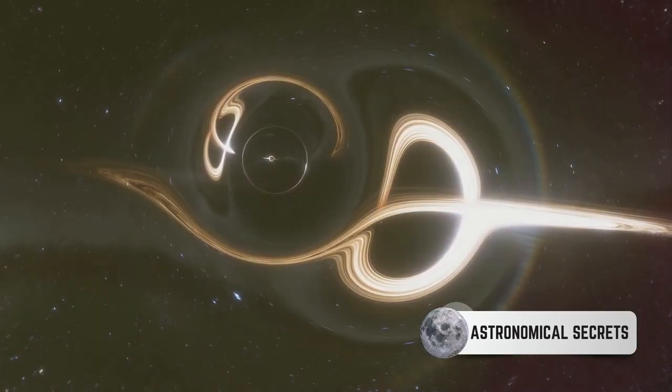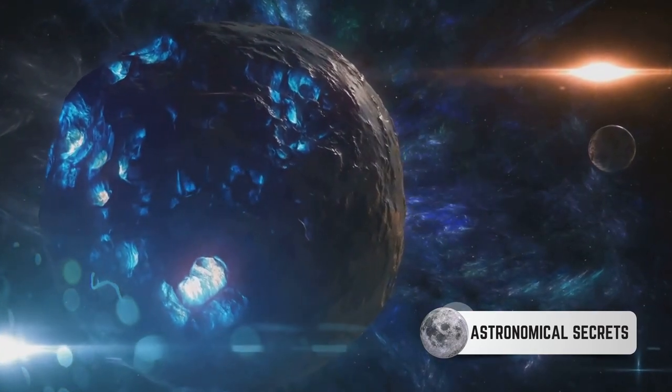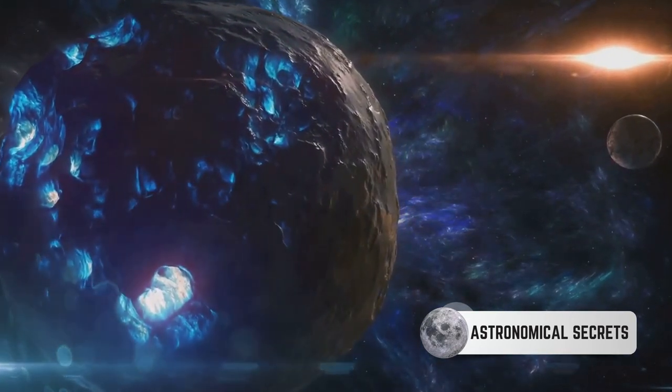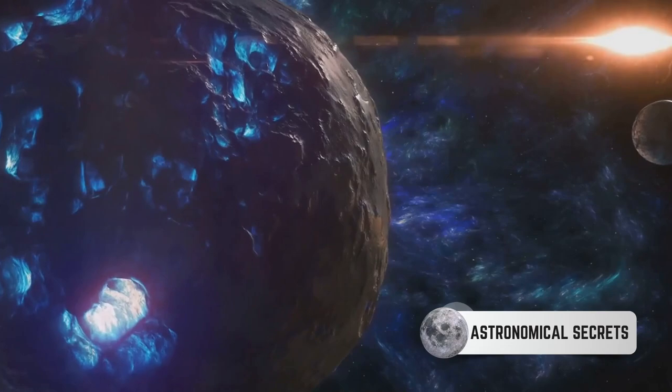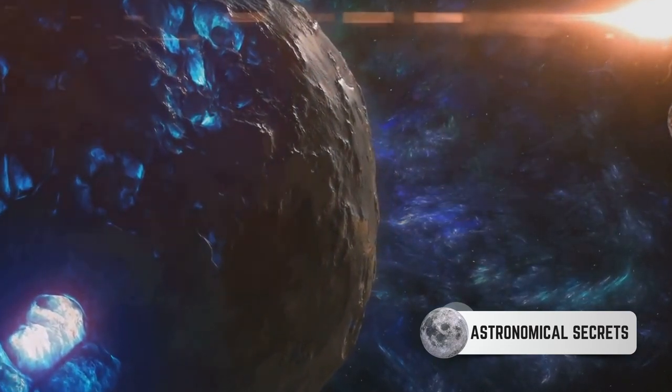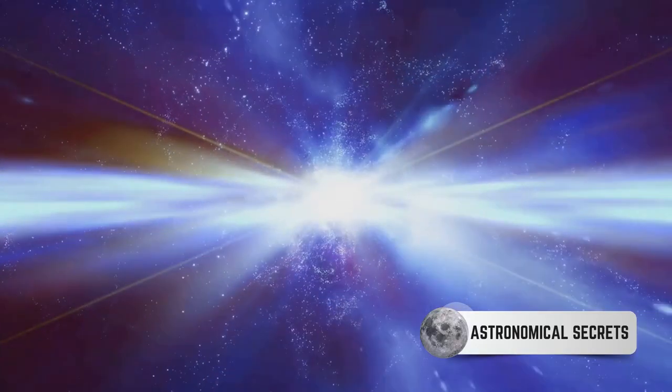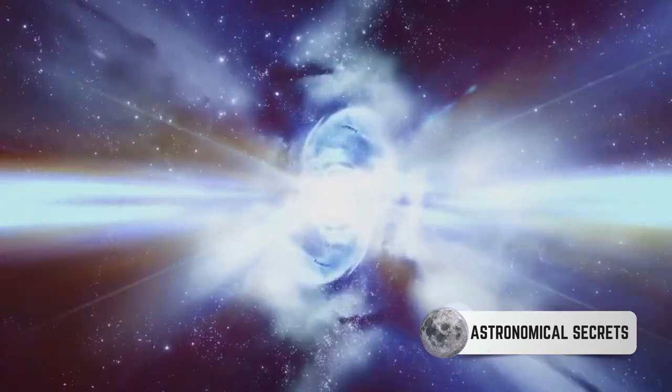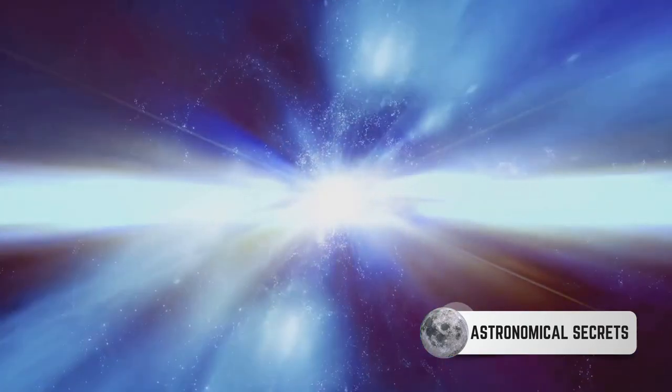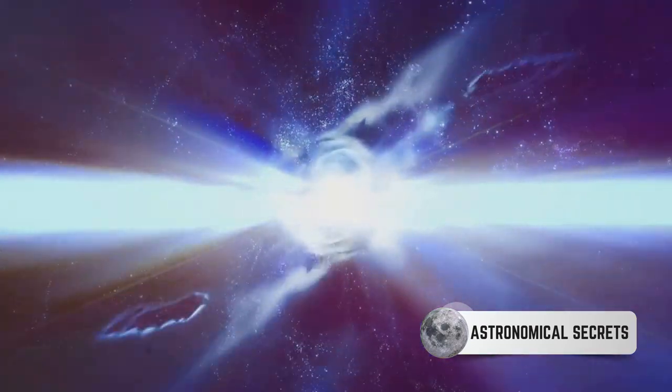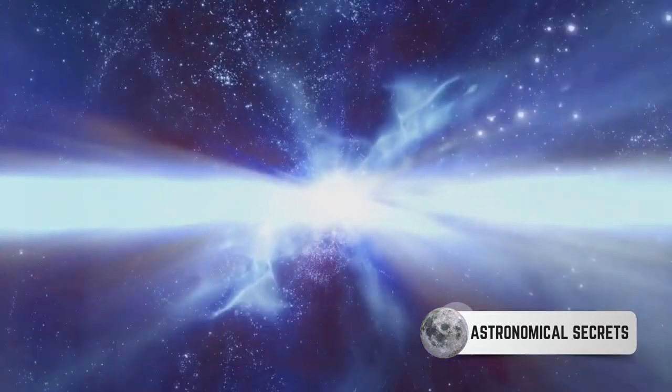This intense magnetism is due to the structure and composition of neutron stars. Their outer crust is a rigid lattice of ions, surrounded by a sea of electrons, which creates an incredibly powerful magnetic field. When a star goes supernova and collapses into a neutron star, its magnetic field intensifies dramatically due to the conservation of magnetic flux.